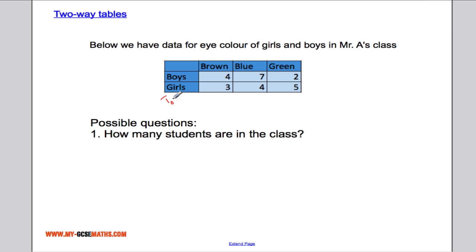So I'm going to add a little column here and work out the totals. Well, how many people have brown eyes? It's going to be seven. How many people have blue eyes? It must be 11. How many people have green? It must be seven. So we've got seven and seven is 14, and 11. That means there's 25 people in total in the class.